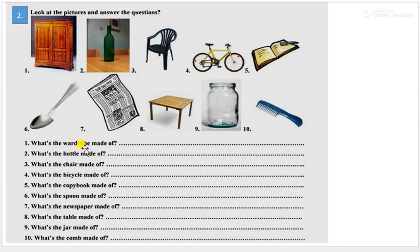You have to look at these pictures and answer these questions. First one, what's the wardrobe made of? The wardrobe, because you can see this picture. What is the wardrobe made of? Wood. Second one, what is the bottle made of?